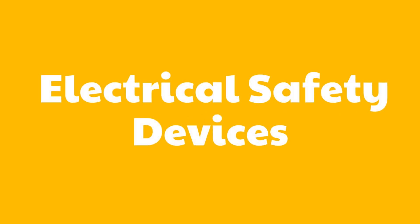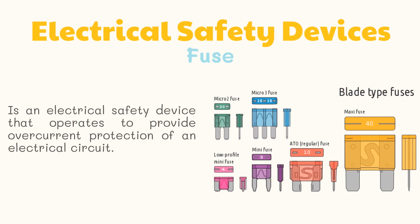Because electric current can be dangerous to handle, people have invented safety devices to protect us from being electrocuted. First on our list is the fuse — it is an electrical safety device that operates to provide overcurrent protection of an electrical circuit.